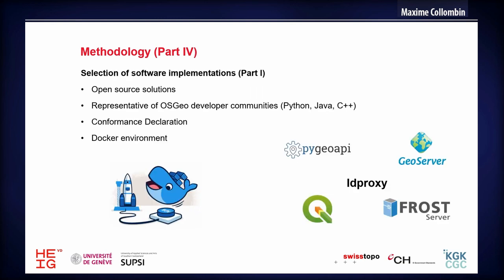We then wanted to know which software we could use to serve these standards. The first idea was to use open-source solutions representative of the OSGeo communities, meaning representative of various programming languages such as Python, Java, and C++. Based on the conformance declaration — meaning all OGC specifications served through the implementation — we favored the Docker environment to establish better portability and distribution.